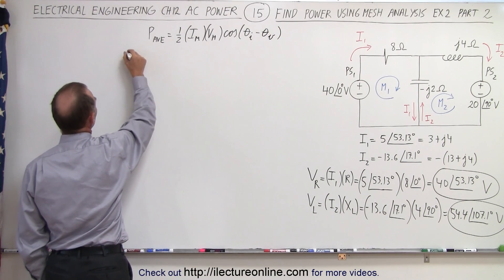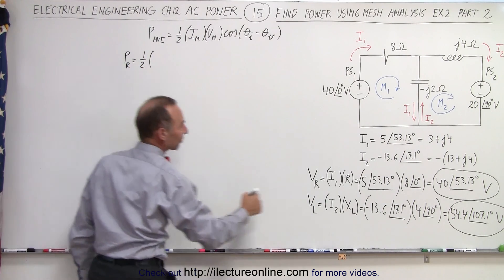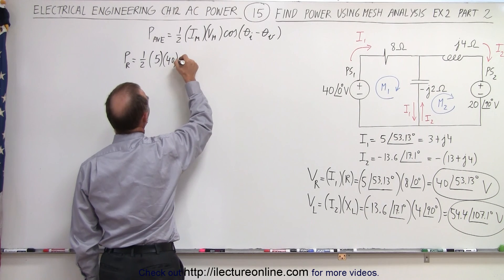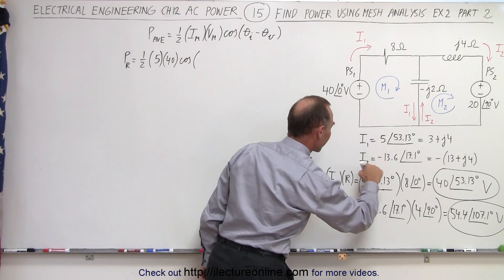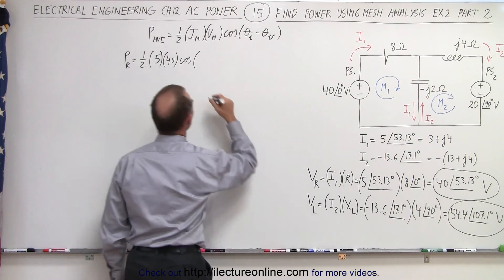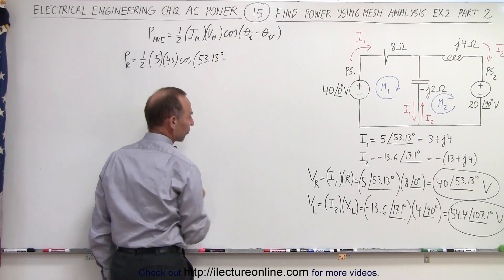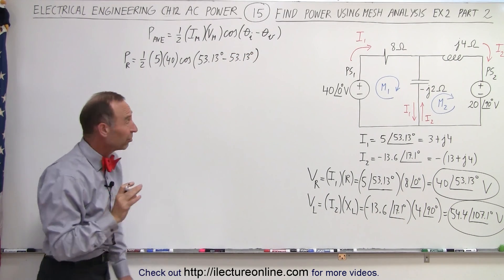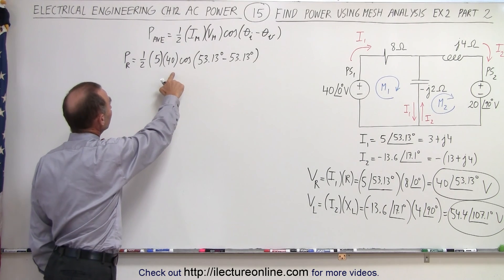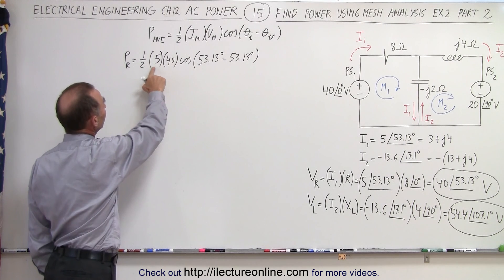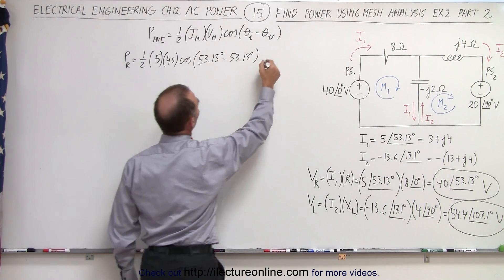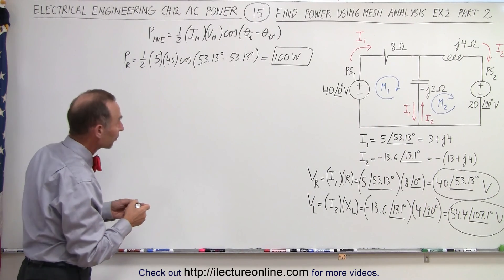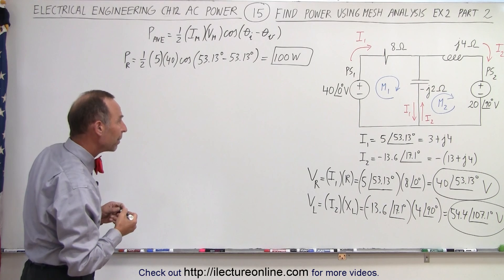The power for the resistor is equal to one half times I max, that would be 5, times V max, that would be 40, times the cosine of the phase angle of the current — 53.13 degrees — minus the phase angle of the voltage, which is also 53.13 degrees. That difference is 0 and the cosine of 0 is 1, so the result is 100 watts absorbed by the resistor.